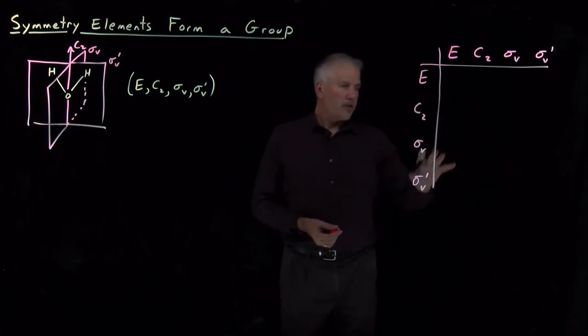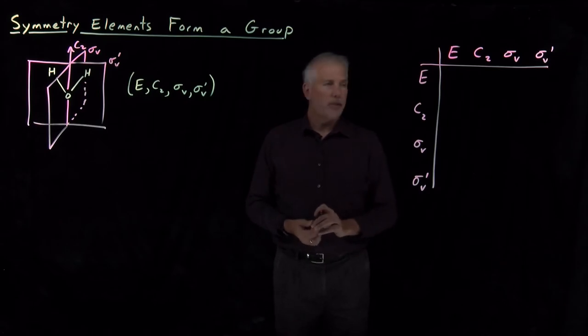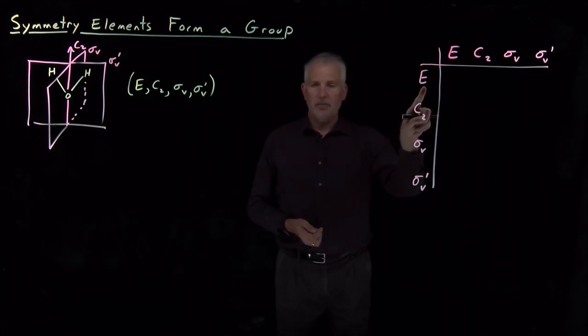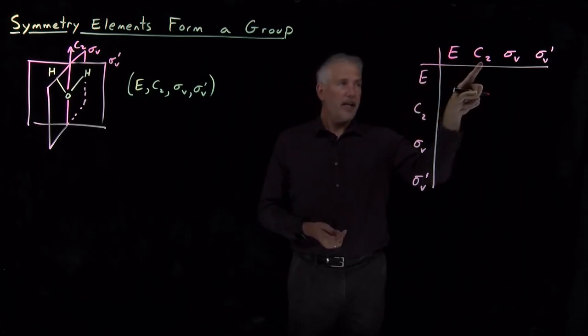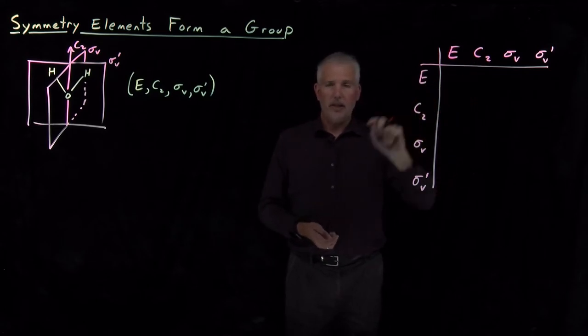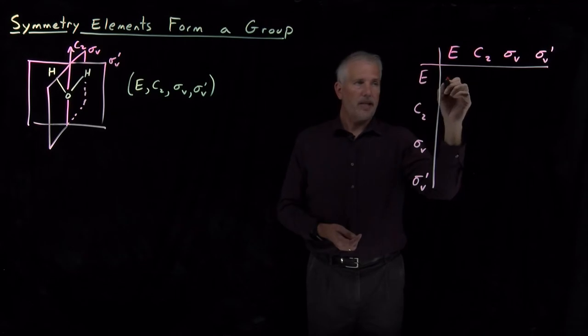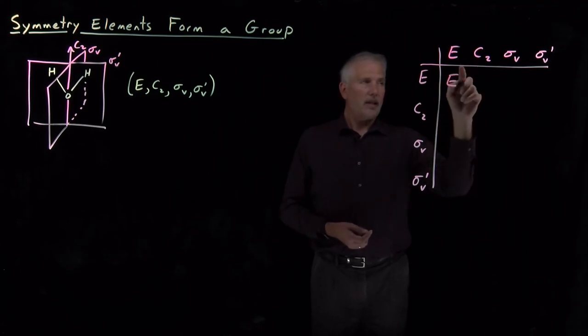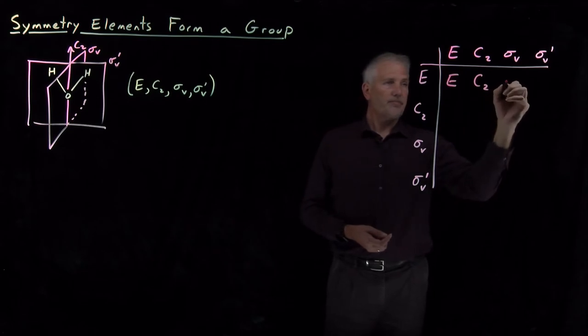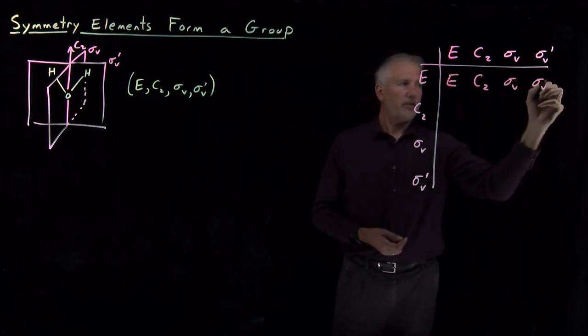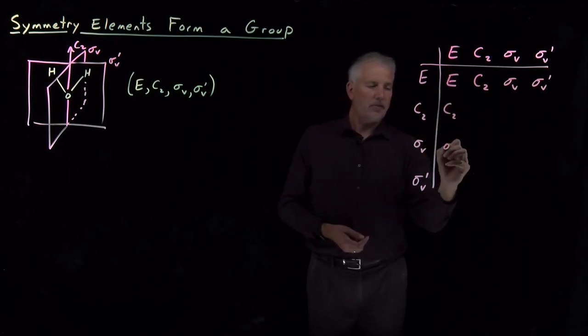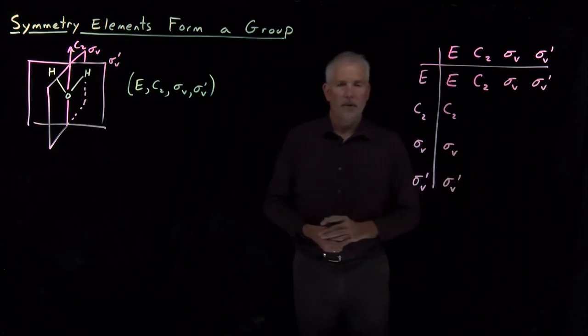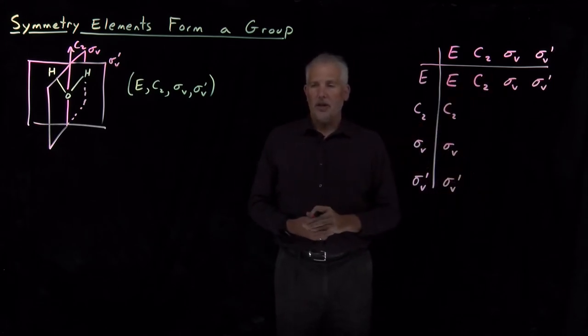So many of the elements, there are 16 different products we need to evaluate. Many of them are fairly simple. The identity element in particular, by definition, if we do an identity followed by or preceded by any of these other elements is as if we didn't do anything when we did the identity. So identity combined with identity just gives us identity. Identity combined with c2 gives us c2. With sigma v and sigma v prime gives us those. And likewise for this column of the table.